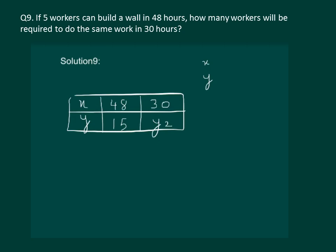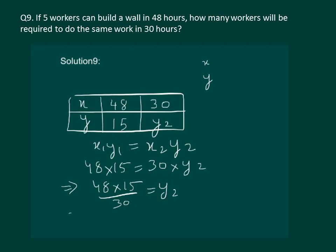Then using the property of inverse proportion x1 y1 should be equal to x2 y2. That means 48 into 15 is equal to 30 into y2 which will give 48 into 15 by 30 is equal to y2. And on solving we get y2 is equal to 24.